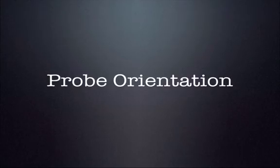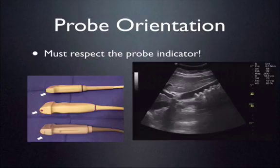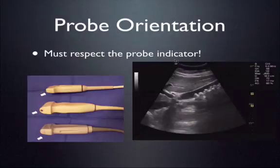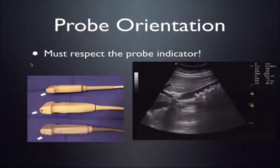Now we'll talk about probe orientation, which is probably the most complicated part of basic ultrasound for newcomers. It takes practice, but becomes automatic like driving a car. The most basic tenet is the probe marker — on the side of each probe there's a marker that correlates with a dot or emblem on the screen. You have to pay close attention because both sides of the probe often have lines or seams that can confuse you.